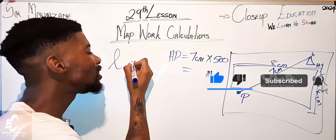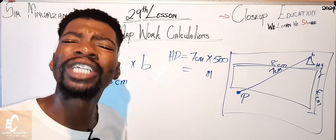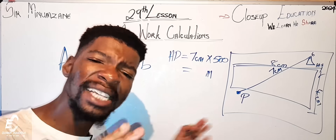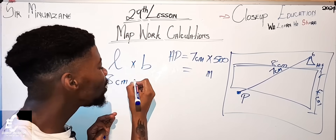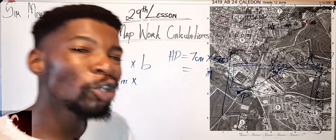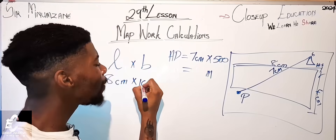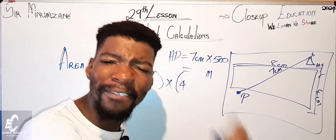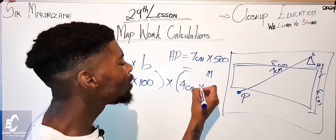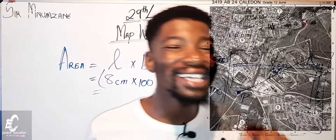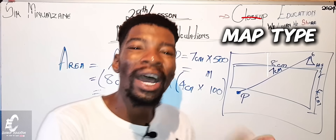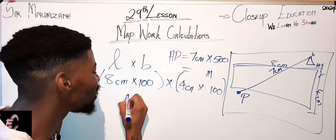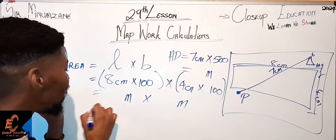The correct method: write the formula as length times breadth. For the length, put eight centimeters inside brackets and convert it by multiplying by 100, because this is an orthophoto map and to convert centimeters to meters you multiply by 100. Close the bracket, then multiply. For the breadth, four centimeters also gets multiplied by 100 for the same reason. Convert everything first.